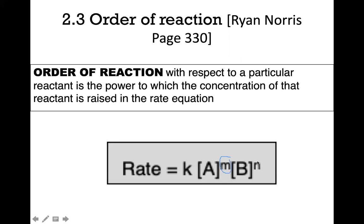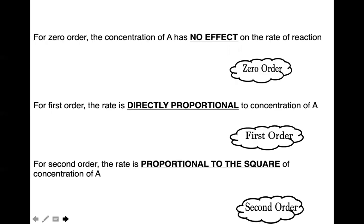M and N are the orders of reaction — the power to which concentrations are raised in the rate equation. Working out the order is a different matter. The common orders covered in your syllabus are zero order, first order, and second order. Zero order means the concentration of A has no effect on the rate of reaction. If you increase A, the rate stays the same — no effect.